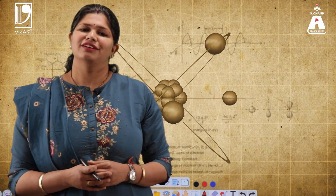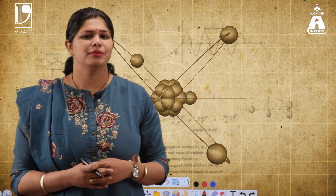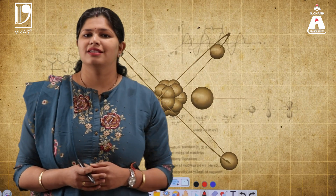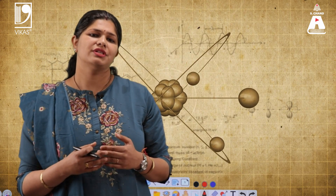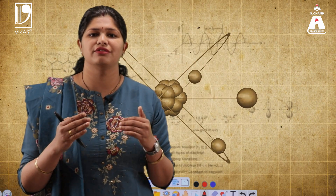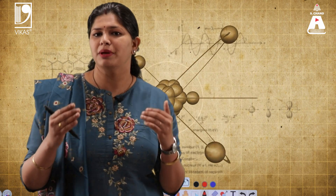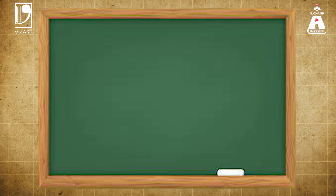We know that the nerve cells in our body work on the principle of electrochemistry. The cells in our body produce electric current or signals, which are the basis of the potential difference developed across the membrane's inner and outer membrane.